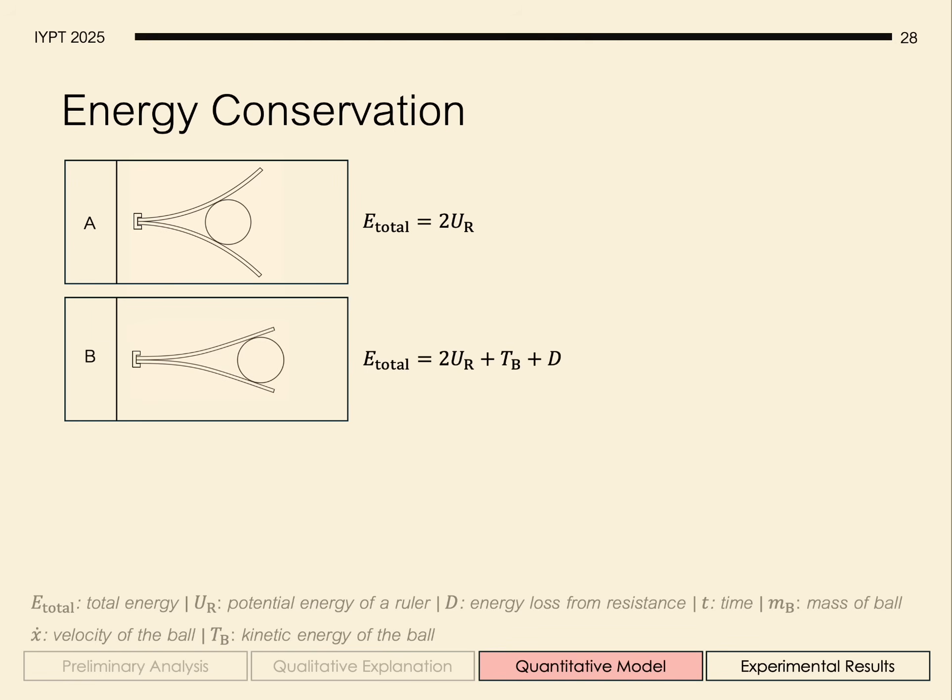As the ball begins to gain some velocity, the total energy is now the sum of the potential energy that's left in the rulers, the kinetic energy of the ball, and some energy dissipated into the environment, such as the kinetic energy of the rulers, or heat, sound, and whatnot.